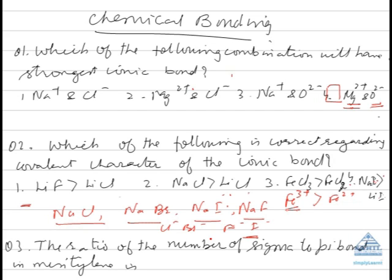Dear students, the sigma bond determines the shape of the molecule and the pi bond shortens the bond length. In the valence bond approach, you cannot have a molecule in which there exists a pi bond and no sigma bond. So if there are two atoms in a molecule, there will be one sigma bond and the others will be pi bonds.